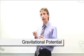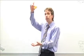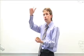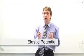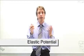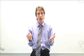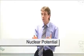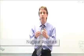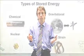Gravitational potential energy is stored in any object which is lifted off the ground. Elastic potential energy would be found in things like compressed springs or stretched rubber bands, whereas nuclear potential energy would be found in materials like uranium or plutonium.